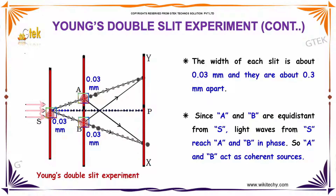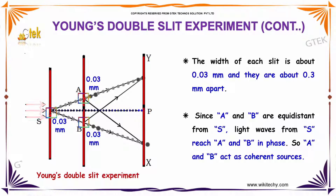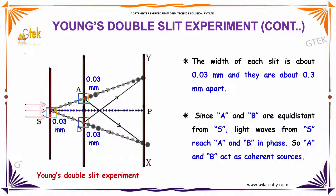The width of each slit is about 0.03 mm and they are about 0.03 mm apart. Since A and B are equidistant from S, the light phase from S reaches A and B in phase, so A and B act as coherent sources.